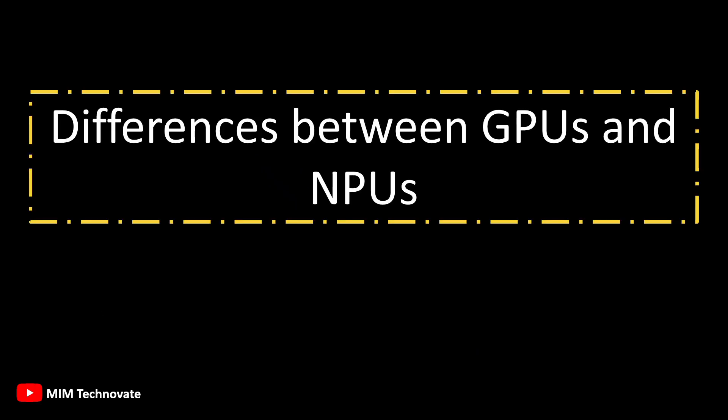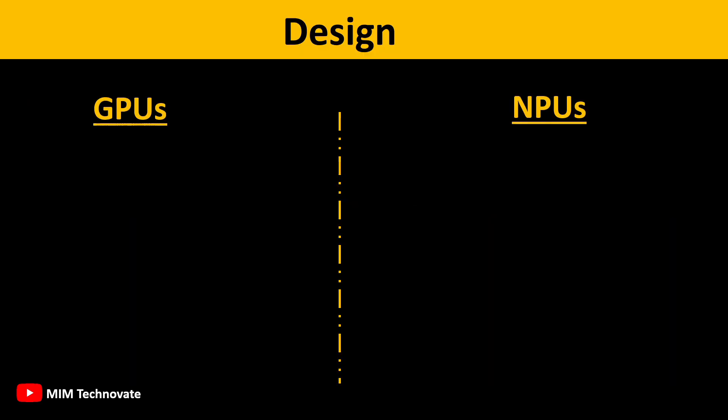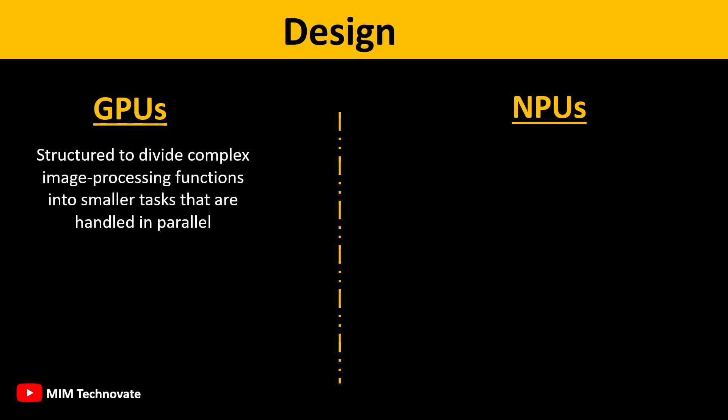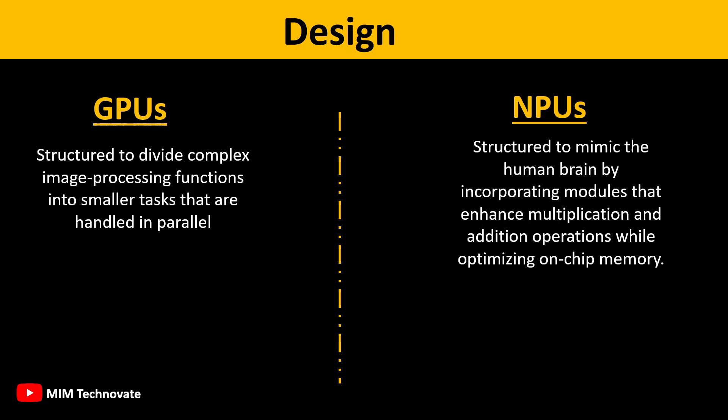Differences between GPUs and NPUs — Design: GPUs are structured to divide complex image processing functions into smaller tasks that are handled in parallel. On the other hand, NPUs are structured to mimic the human brain by incorporating modules that enhance multiplication and addition operations while optimizing on-chip memory.